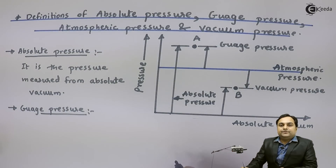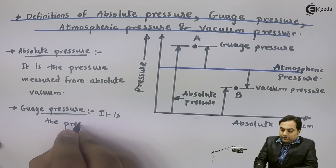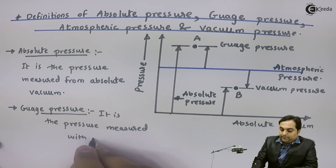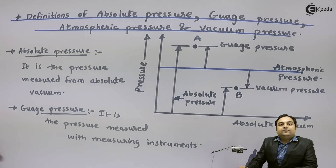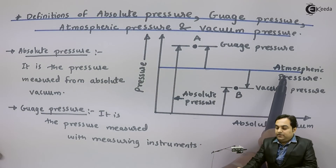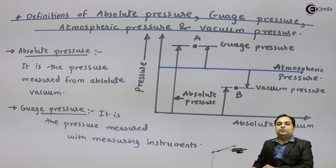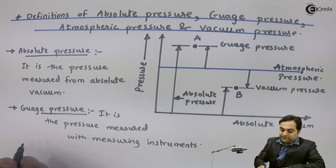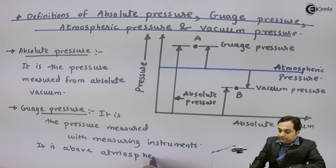Next is gauge pressure. Gauge pressure is the pressure which we measure with the help of measuring instruments. When we are measuring gauge pressure, our reference is atmospheric pressure, meaning atmospheric pressure is taken as zero. The measuring instruments used start from a zero reading, and that zero reading indicates atmospheric pressure. So gauge pressure is the pressure measured with measuring instruments and it is above atmospheric pressure.